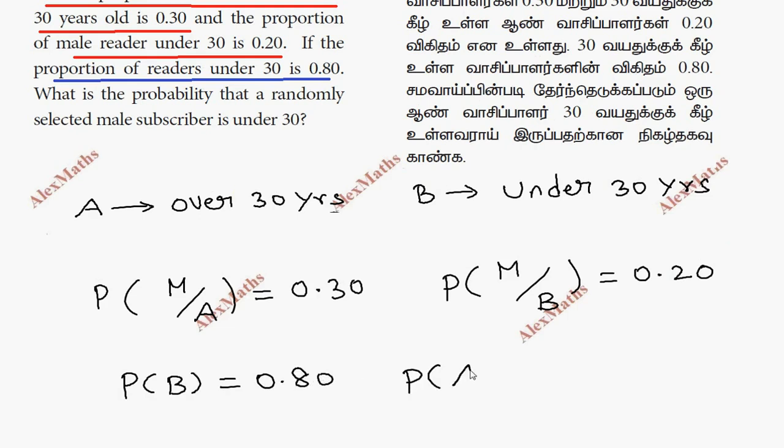Automatically, P of A is 1 minus 0.80, that is 0.20. The total probability is 1.